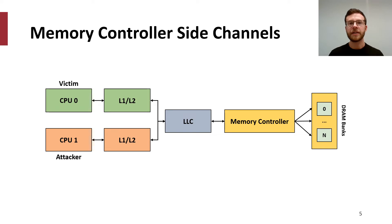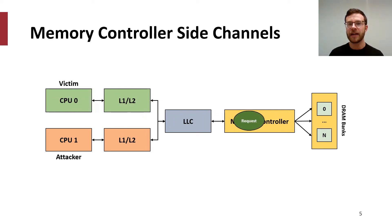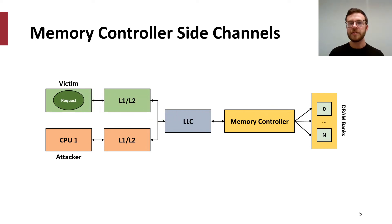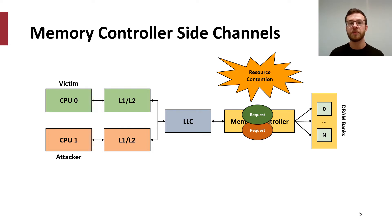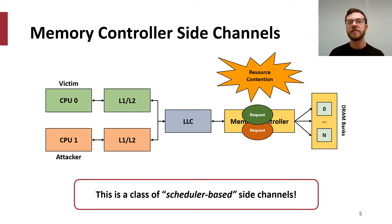To give a primer on memory controller side channels, we can first imagine the pathways that a memory request will take throughout the microarchitecture. A request will traverse from a CPU through the cache hierarchy before being serviced by the memory controller, which is shared by all CPUs on a system. This is problematic, as if an attacker simultaneously issues a request, their request may collide with the victim's, resulting in a visible latency caused by the controller's scheduling policy. This is a class of scheduler-based side channels, otherwise sometimes known as stateless or conflict-based channels.